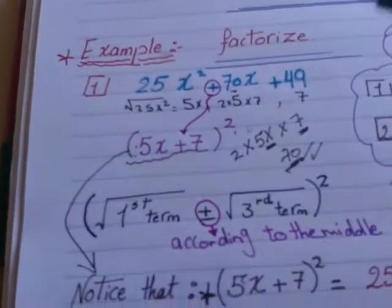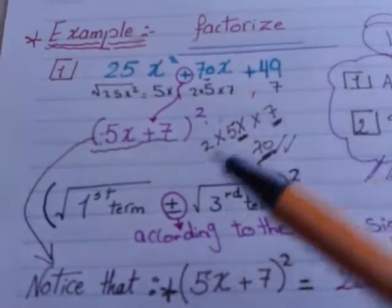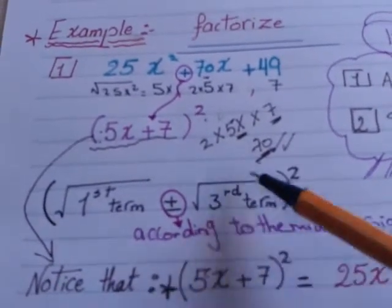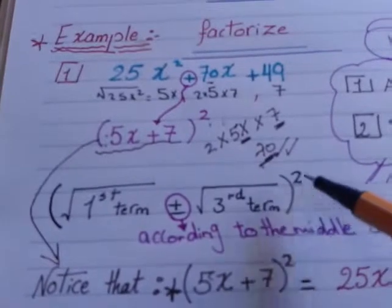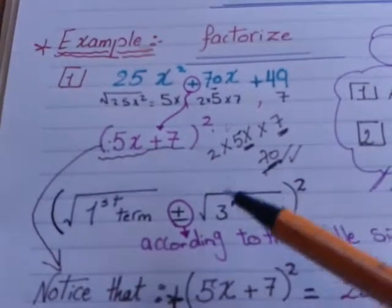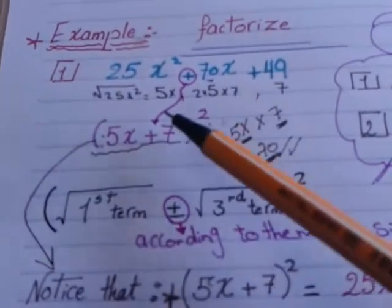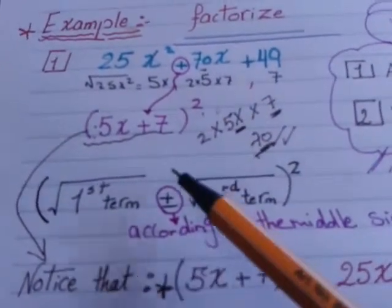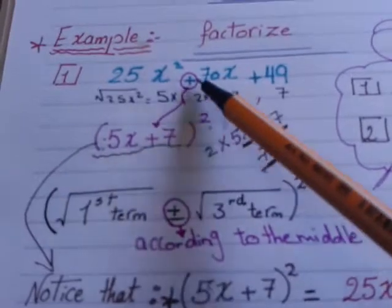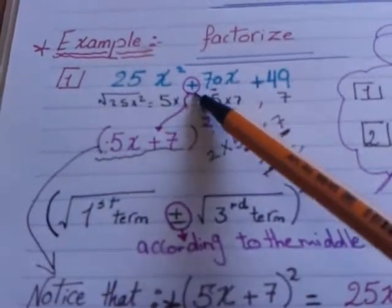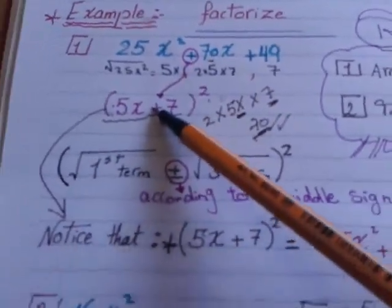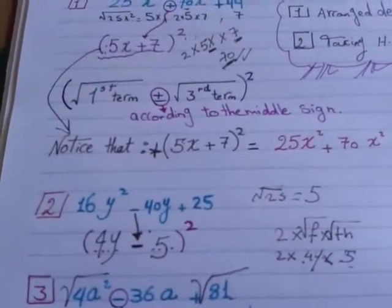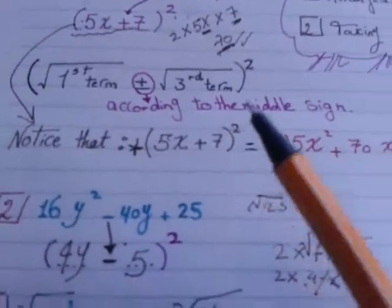That means the rule is: root of the first term, positive or negative, root of the third term, all to the power 2. But what about this positive or negative? Shall I put positive or negative according to my mind, or what? I have to choose the sign according to the middle sign of the trinomial. The middle sign here is positive, so write positive. For example, if the middle term here is negative, drop negative, and so on.